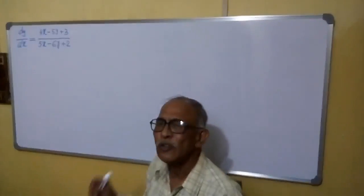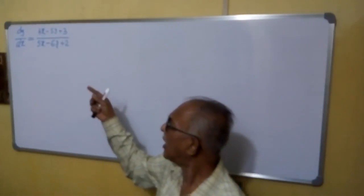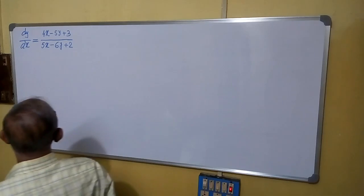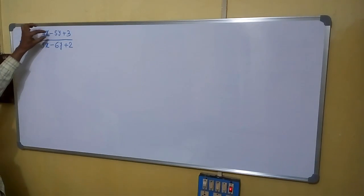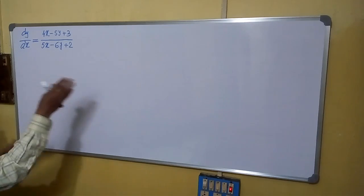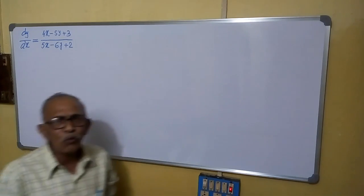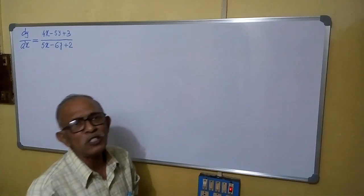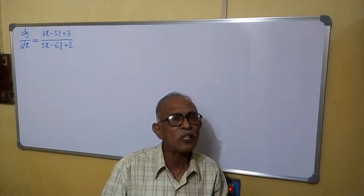Welcome. We are going to solve a particular type of differential equation. You can see the coefficient: it is 4 by 9 and it is minus 5 by minus 6. This ratio is not equal. In this type of case, how to proceed with this differential equation? I am showing a method.